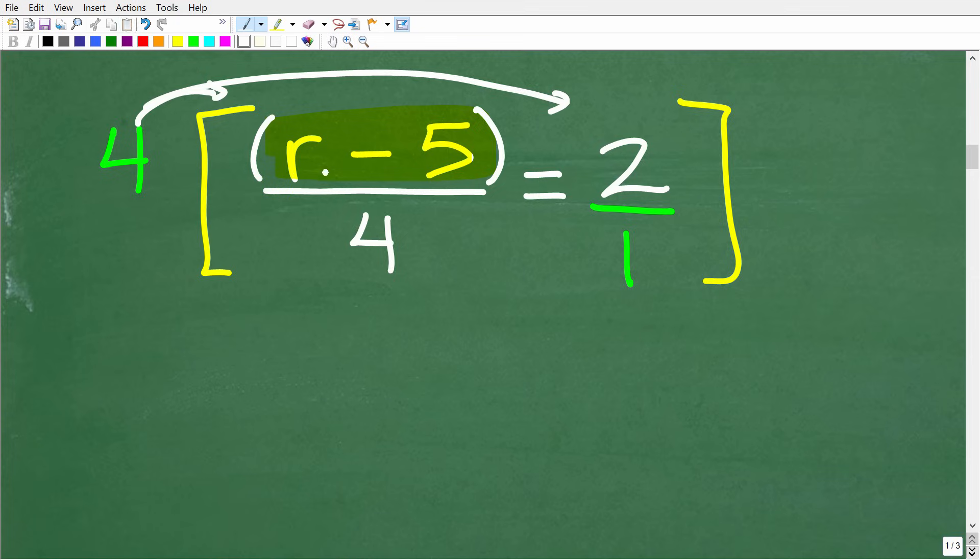Okay, so now we're going to take this 4, or the LCD, and we're going to multiply it by everything in the equation. So 4 times r minus 5 over 4. Well, to multiply fractions, remember, we're going to multiply the respective numerators and denominators. But what's going to happen here is the 4s are going to cross-cancel, and we're going to be left with r minus 5. Okay, now you can have parentheses around this expression right here, or you could just leave it as r minus 5. Either way is fine. But let's suppose you had a 2 down here,